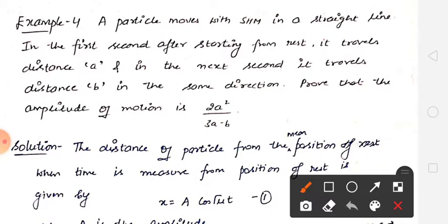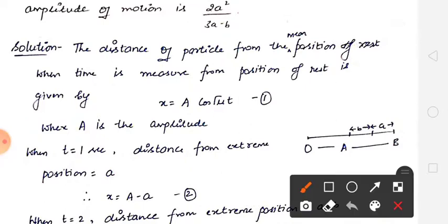हमें ये given है कि particle simple harmonic motion execute कर रहा है। Particle ने travel करना start किया from rest से। First second में उसने A distance travel किया। Next second में उसने B distance travel किया उसी direction में। हमें amplitude find out करना है। यहाँ पर इस तरह का motion होगा — this is our mean position। ये हमारी rest की position है जहाँ से particle ने चलना start किया। First second में उसने A distance travel किया, और उससे next second में B distance travel किया।